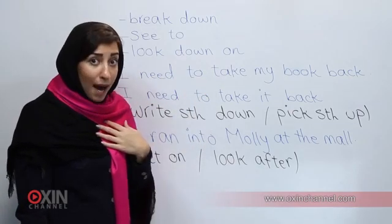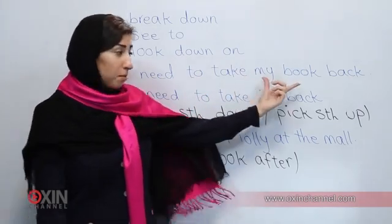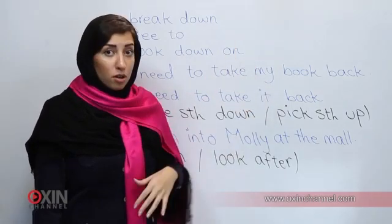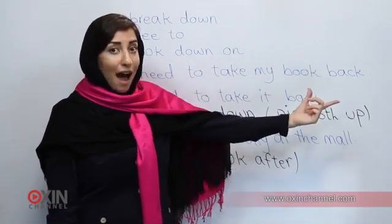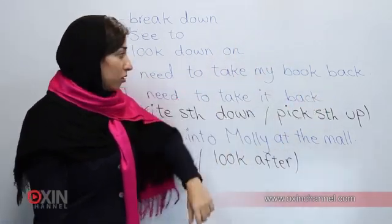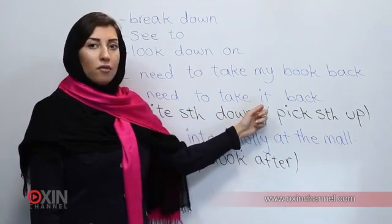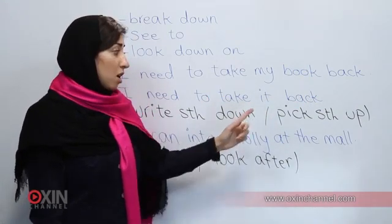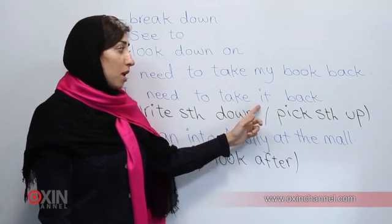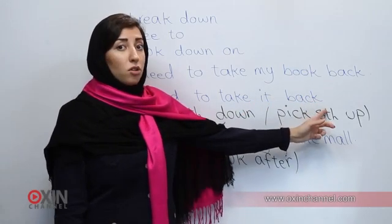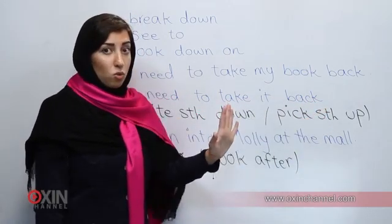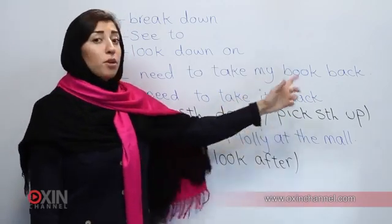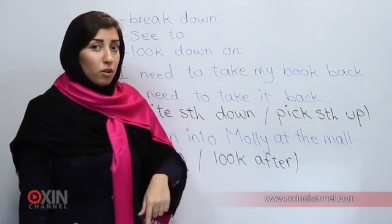To recap: 'I need to take my book back,' 'I need to take back my book' — the object can go after the particle. Or you can use the objective pronoun, which goes in the middle. But remember, the objective pronoun can never go after the particle. We never say 'take back it' — that's wrong. It's 'take it back,' 'take your book back,' or 'take back your book.'